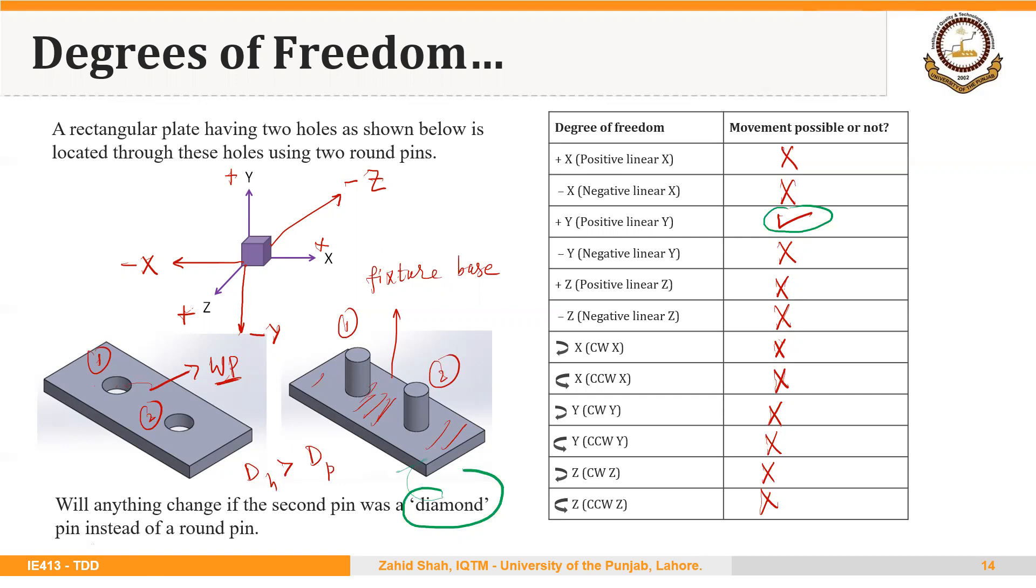Using two round pins, 11 out of 12 degrees of freedom are restricted. I hope now the concept of 12 degrees of freedom and how they are restricted in jigs and fixtures is clear. Thank you very much.